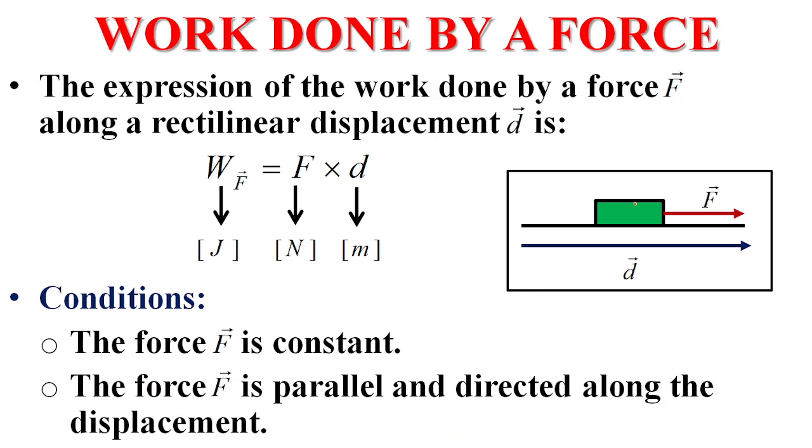A force F is applied on a given object. This object is displaced by D vector. F is an applied force. D vector is a displacement. Now we define the work done by F as a product of the force and the distance. Work done by F, or simply W, equals F times D. What are the two conditions?